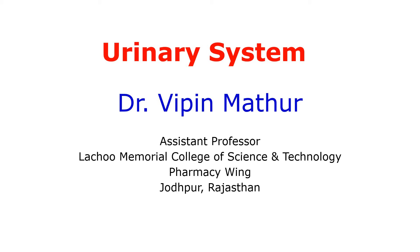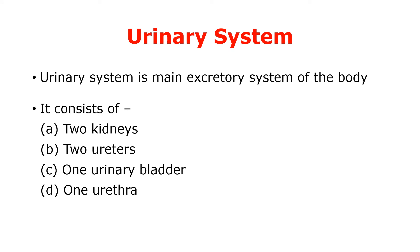Dear students, in this presentation I will explain the structure of the urinary system. The urinary system is the main excretory system of the body. It helps in excreting various metabolic wastes such as urea and uric acid out of the body in the form of urine. The excretory system, apart from the urinary system, also includes skin, intestine and lungs.